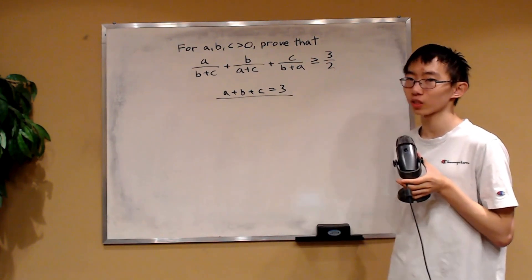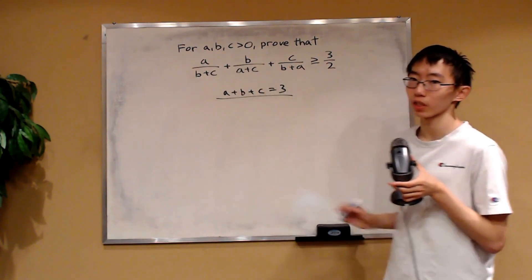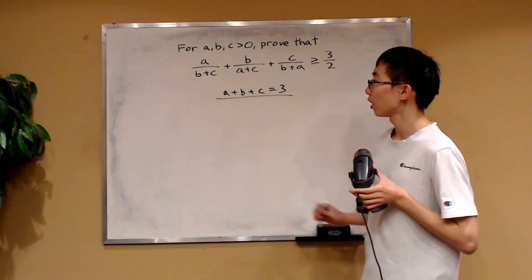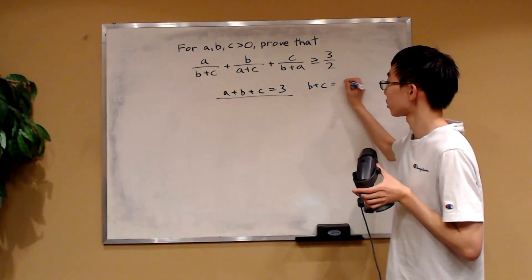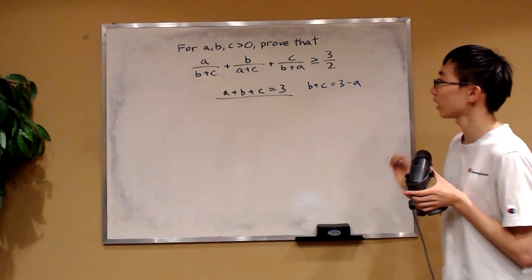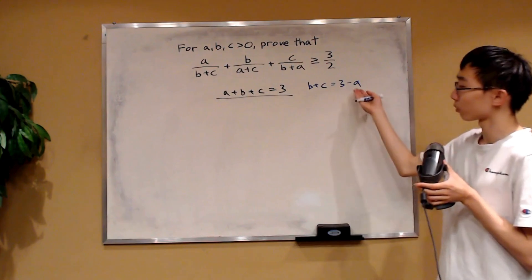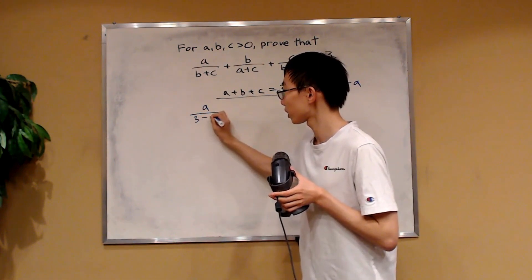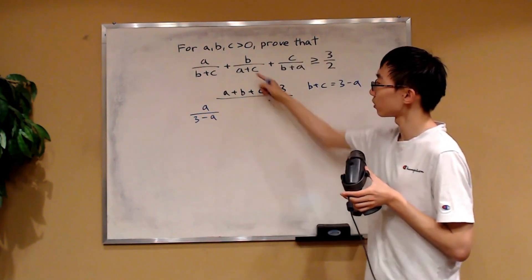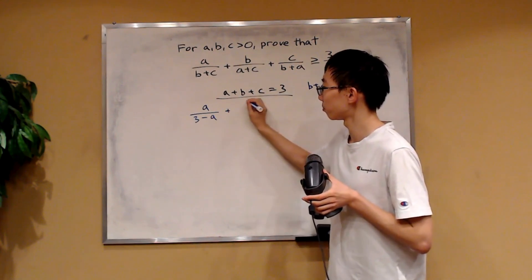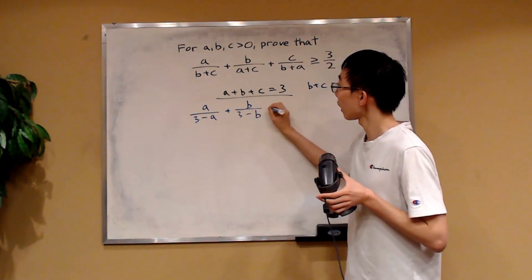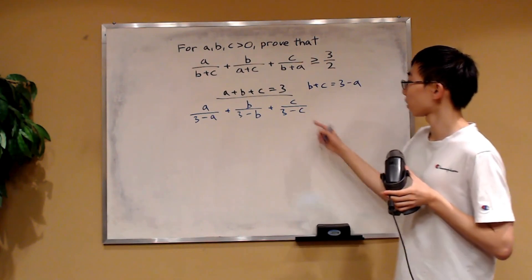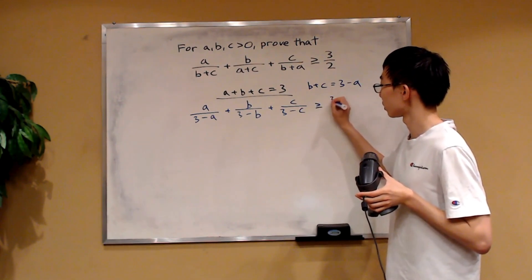Okay, with this condition set up, we can finally write each of these terms as a function of just one variable. And that's because from this, we can get that B plus C is equal to three minus A. And with this term, we can substitute B plus C with three minus A. So this term becomes A over three minus A. And similarly, these two terms, they become B over three minus B, and C over three minus C. And we still want to prove that this sum is greater or equal to three over two.